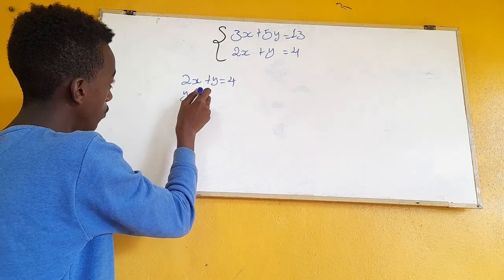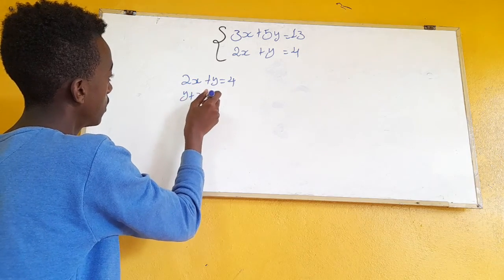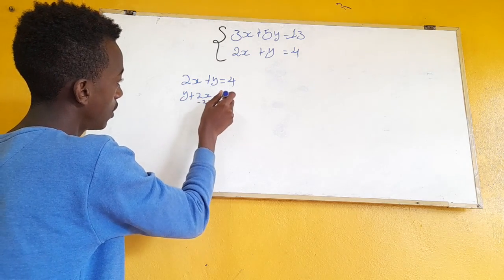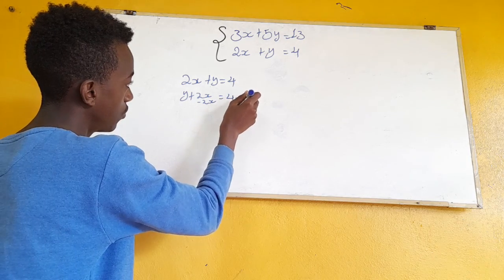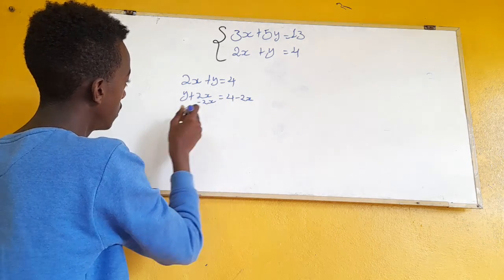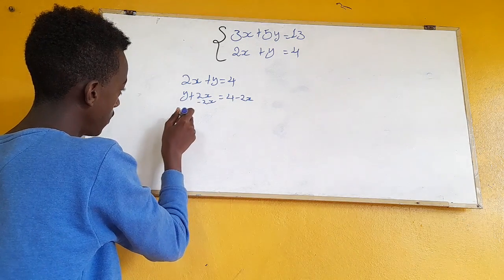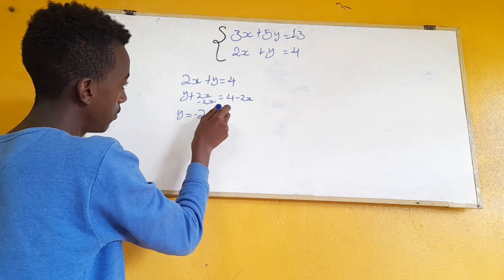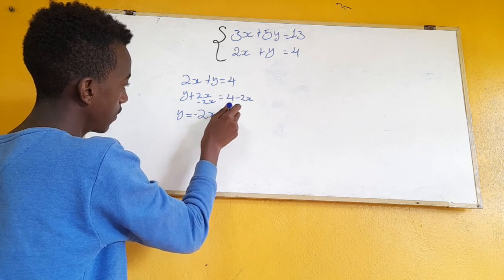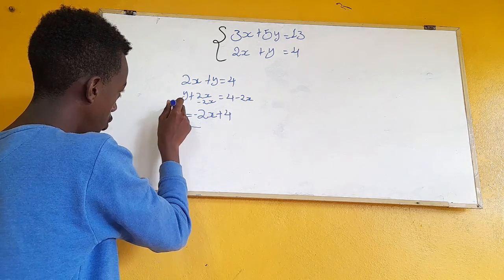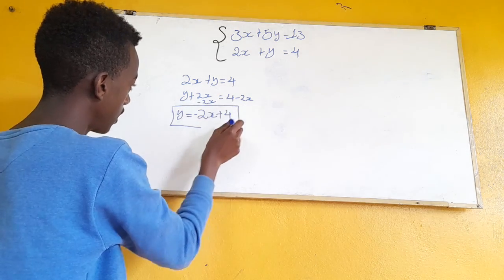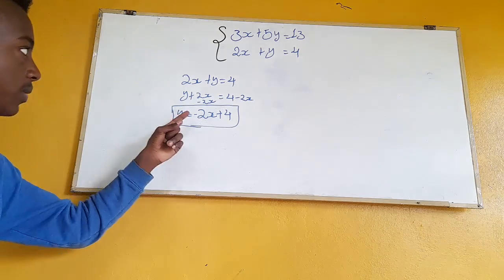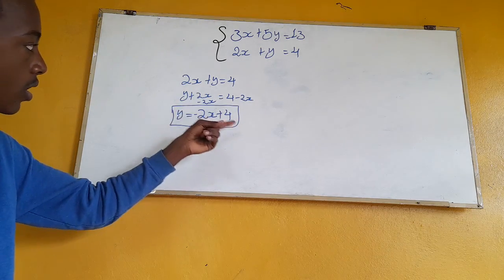y plus 2x minus 2x is equal to 4 minus 2x. So y is equal to minus 2x plus 4. Here, 2 is a term and y is a term in the equation 2x plus y is equal to 4.